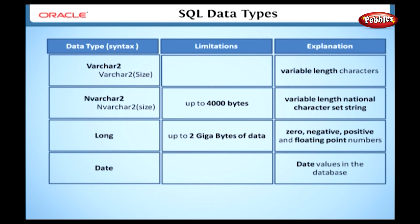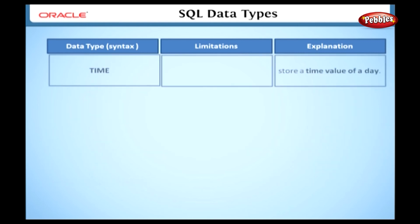Date. This data type is used to store the date values in the database. In this type, we can store dates between January 1, 4712 BC, and December 31, 9999 AD.